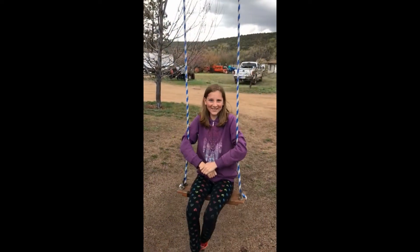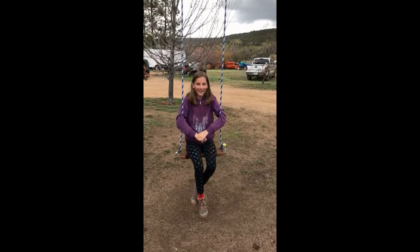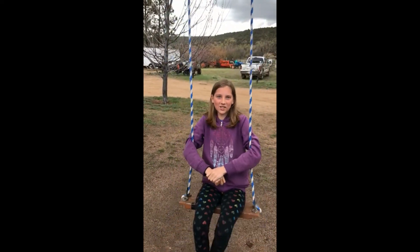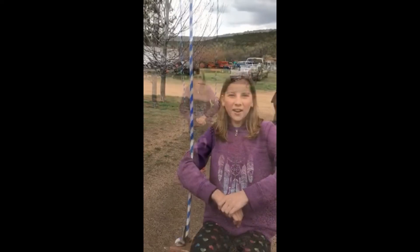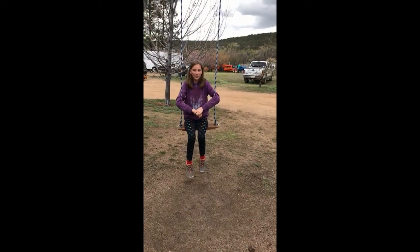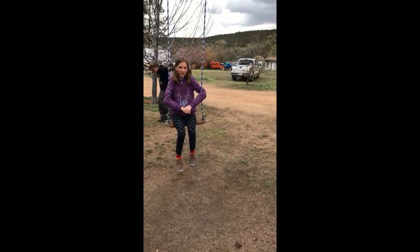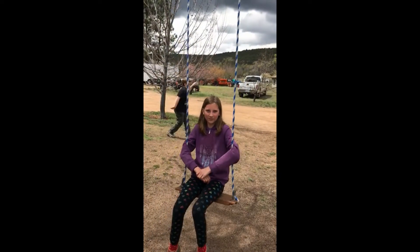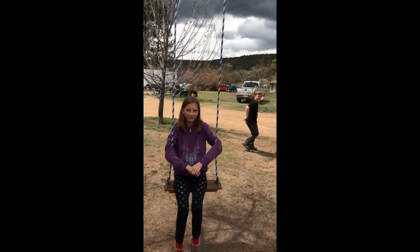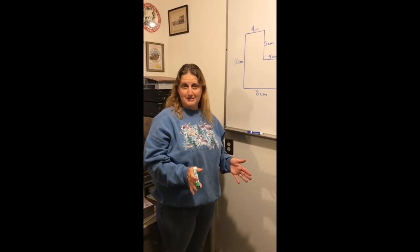This is my niece Taylor — she's going to give you the next problem. This swing is six inches wide and 20 inches tall. Can you figure out the area of the swing? The area of the swing is 120 square inches. Can you find the perimeter? The perimeter of the swing is 52 inches.